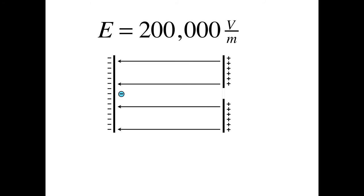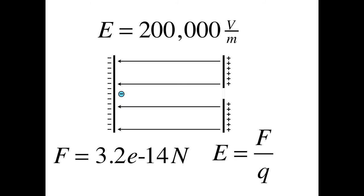Remember, the electric field goes from positive to negative, but since the electron is negative, it moves in the opposite direction of the electric field. We then use that electric field to find the force on the electron — using 200,000 V/m and the charge of an electron, we get a force of 3.2 × 10⁻¹⁴ newtons.